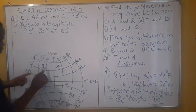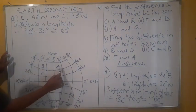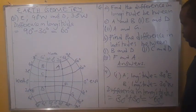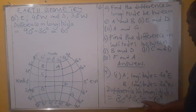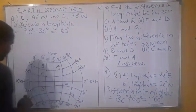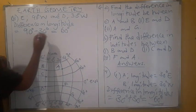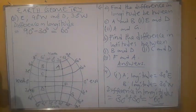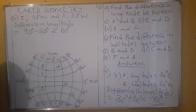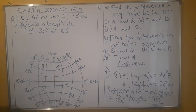Looking at A and B: A was 30 degrees East and B was 30 degrees West, so we got the difference by adding because they are on different sides. For E and D we subtracted because they are on the same side. If they are on the same side of the Greenwich meridian you subtract; if they are on different sides you add.